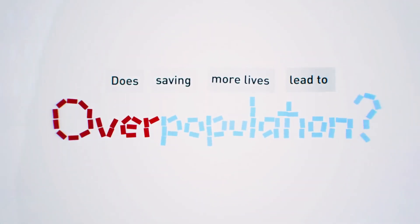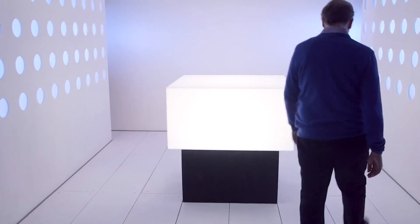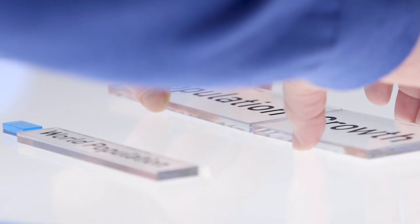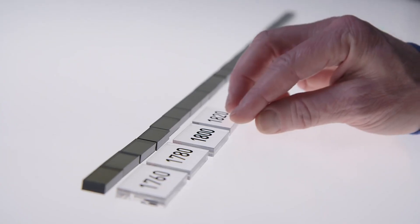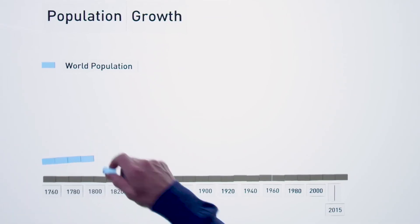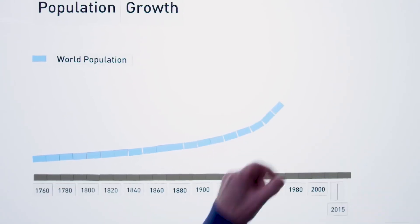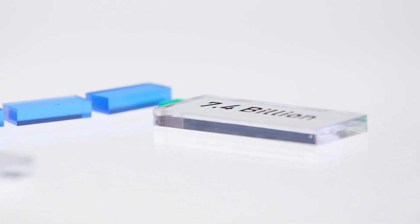In this year's annual letter, Melinda and I take the toughest questions we get asked and give our answers. One that's come up for a long time is, as we make the world healthier, is the population going to get so big that feeding everybody and maintaining the environment is going to be impossible?